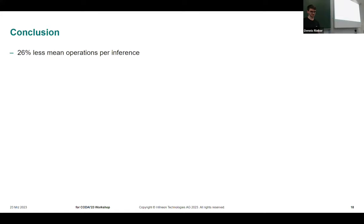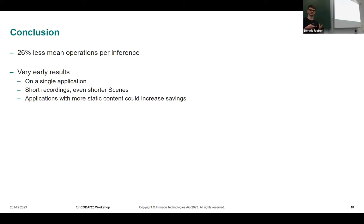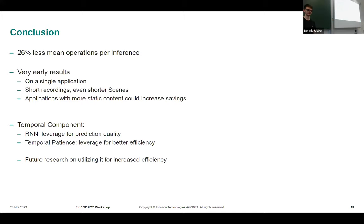Now for the conclusion. I already mentioned the 26% less operations. These are very early results on the dataset we had at hand. We are hoping to achieve even better results on real smart home or smart building recordings. When the applications have more static content, the efficiency increase should rise as well. We present this here today because we wanted to show that the temporal component of your input data cannot only be used to increase the accuracy of your models, as it has been previously done with RNNs and similar architectures. But for the embedded use cases, it might be better to look into methods to utilize that for better efficiency. We are hoping that there will be more solutions in the future that go in a similar way.